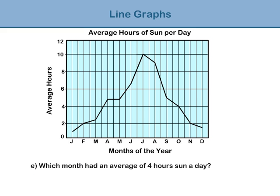Question e: Which month had an average of four hours of sun a day? To answer this question, we read up the y-axis to 4, and then go along until we meet the line graph. October had an average of four hours a day.